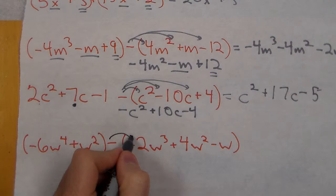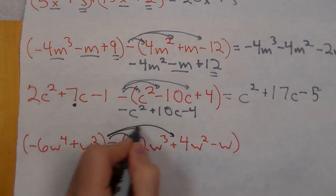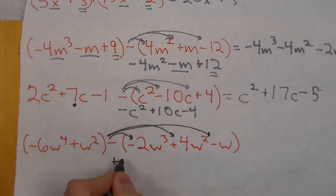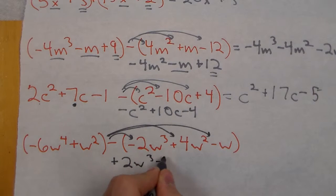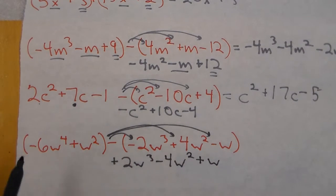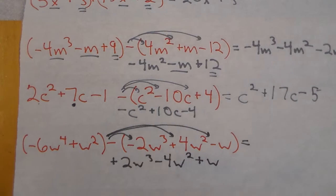For our next one I'll distribute in the negative first. We go plus 2w³ minus 4w² plus w. Now we're looking for like terms to combine.